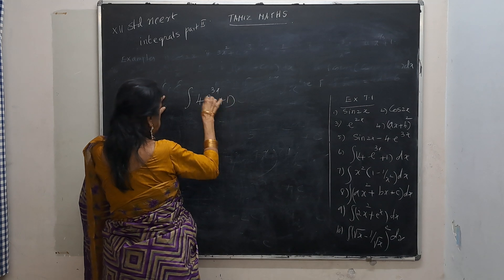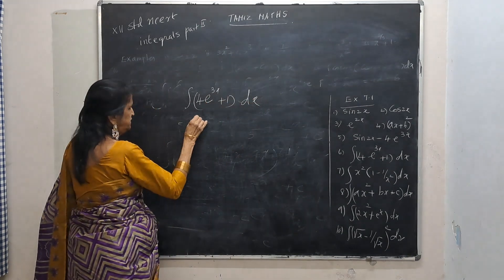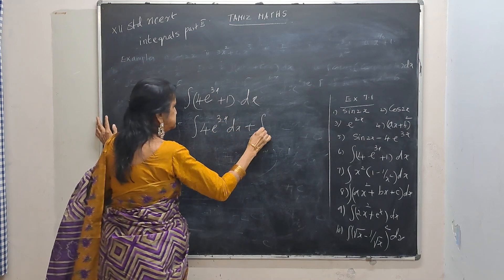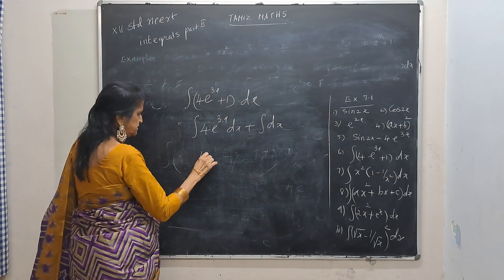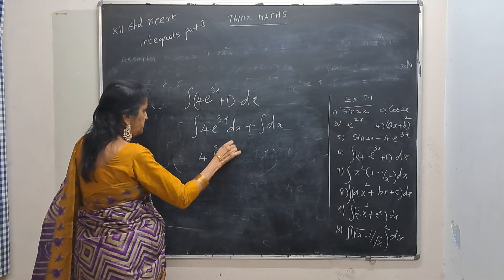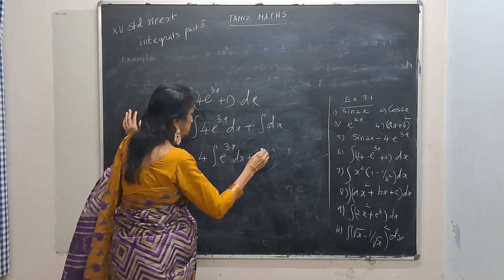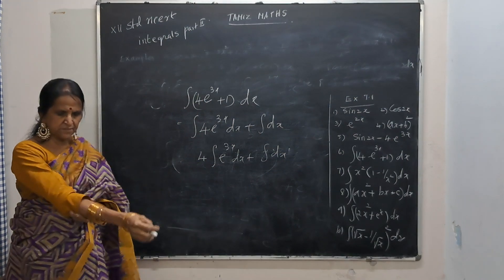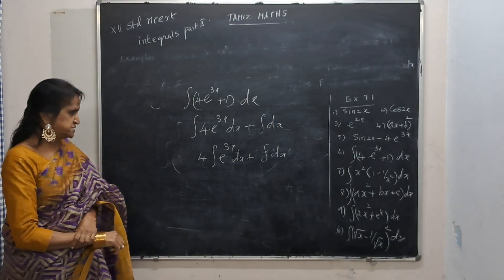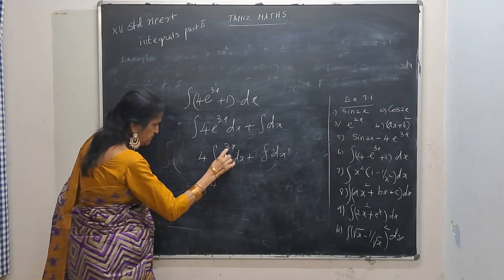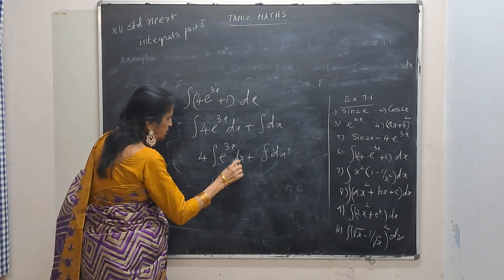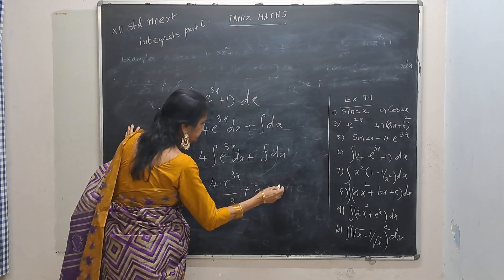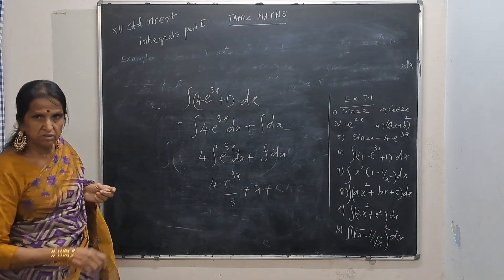Now we go for: integral of 4e to the power 3x plus 1 dx. Split: integral of 4e to the power 3x dx plus integral dx. 4 is outside, then integral of e to the power 3x. This is 4 times e to the power 3x divided by 3, plus integral dx which is x, plus c.